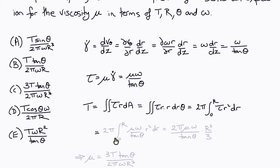Which is 2π times the integral from 0 to R of μω over tan θ, which are all constants, times r² dr, which is therefore 2πμω over tan θ times the integral of r², which is r³ over 3, evaluated between 0 and capital R as R³ over 3, gives us that the viscosity μ is 3 times the torque T times tan θ over 2π ω R³.